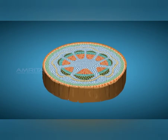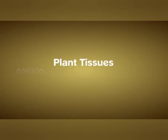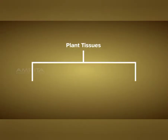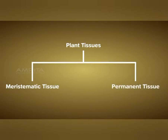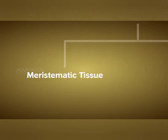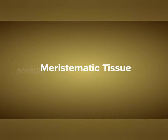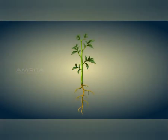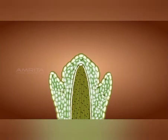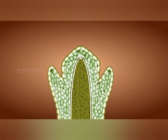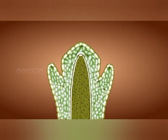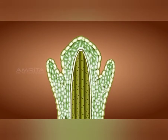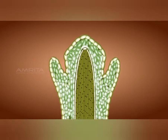As plants are multicellular organisms, they will have millions of tissues. There are two important types of tissues in plants which are meristematic and permanent. The meristematic tissues are also called as the dividing tissues. The main purpose of meristematic tissues is division.